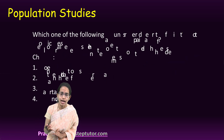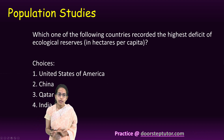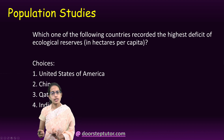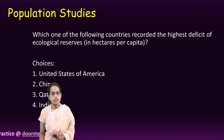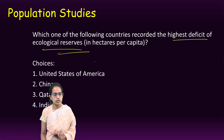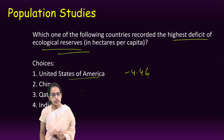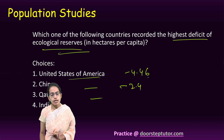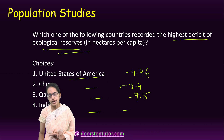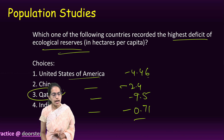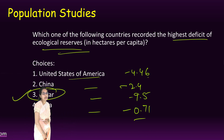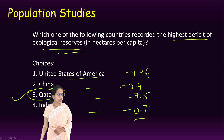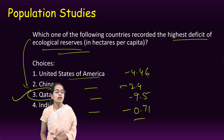Mortality and morbidity are extremely important topics — around 10 to 20 questions are asked directly or indirectly from this section. The next question asks which country recorded the highest deficit in ecological reserves. The values were: United States at minus 4.46, China at minus 2.4, Qatar at minus 9.5, and India at minus 0.71. Qatar recorded the highest deficit, making it the correct answer.